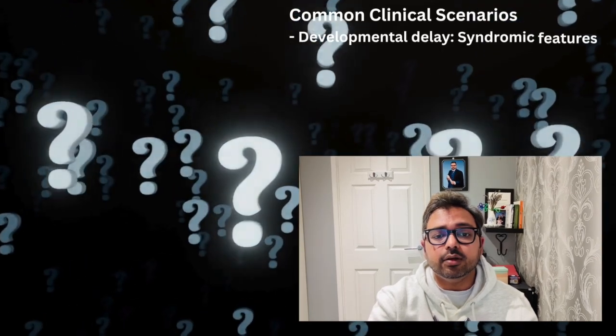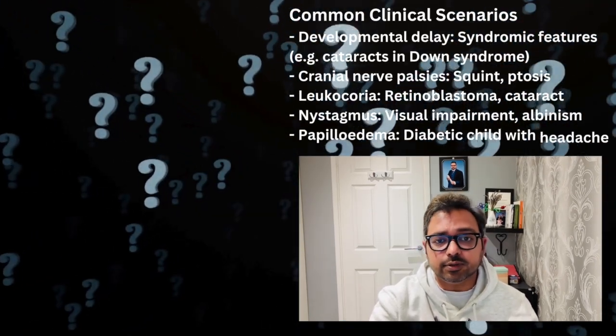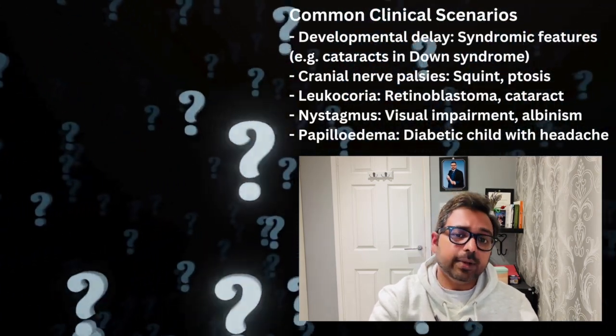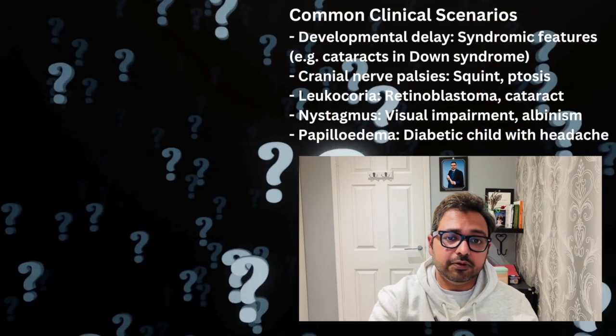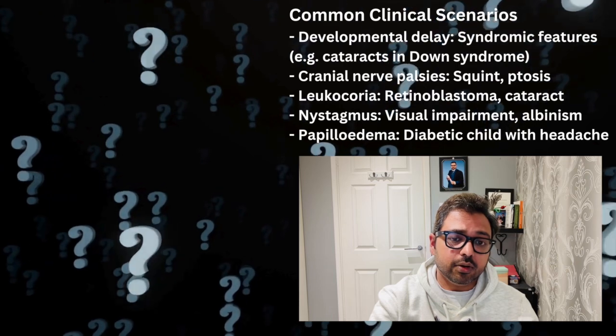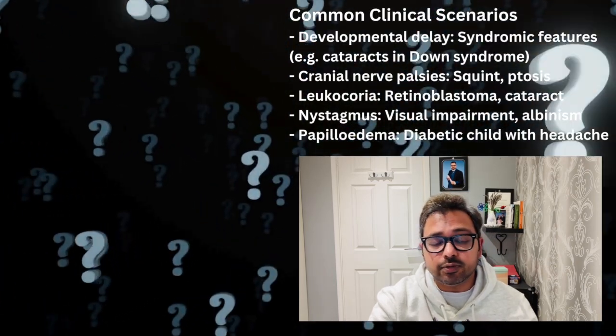Common case scenarios in examinations include developmental delay with syndromic features such as cataract in Down syndrome. Cranial nerve palsy may present as squint or ptosis. Leukocoria may indicate retinoblastoma or cataract. Congenital cataract is another important topic. Nystagmus may be present due to visual impairment or albinism. Other scenarios include papilledema in a diabetic child presenting with headache.